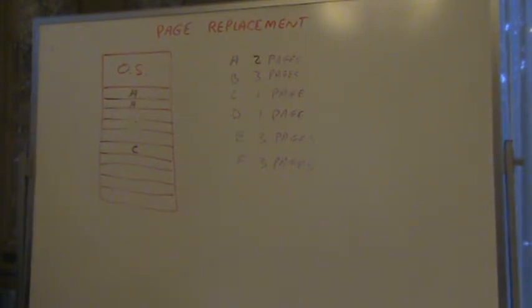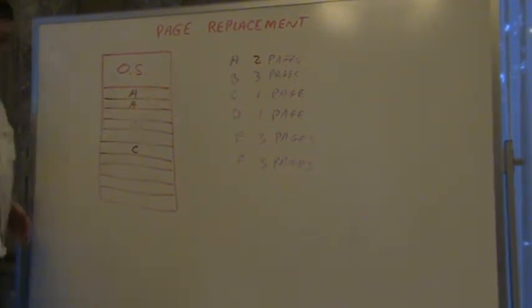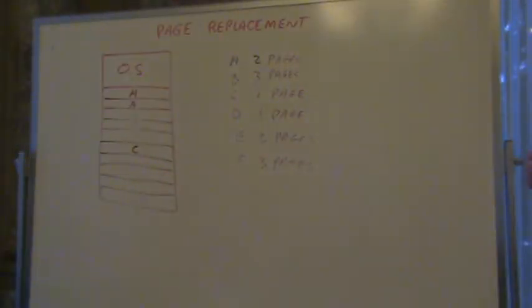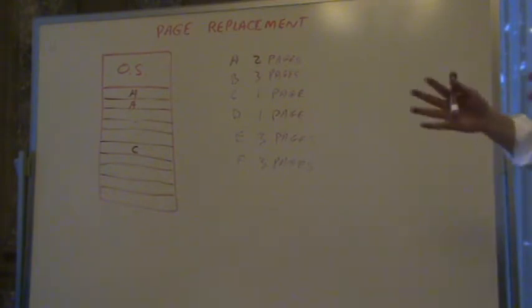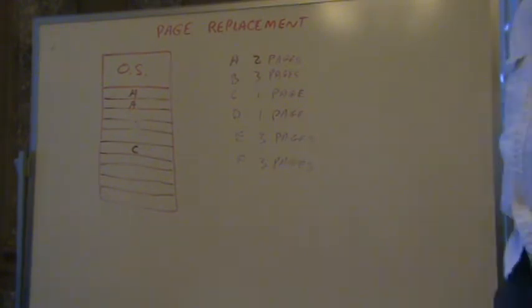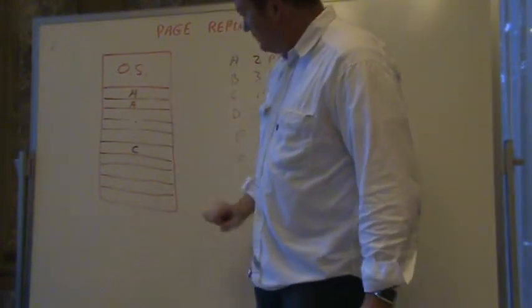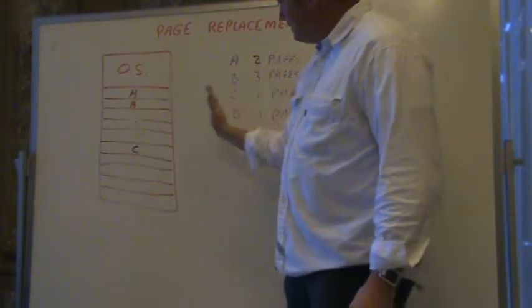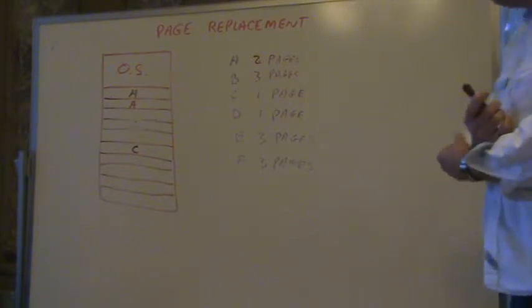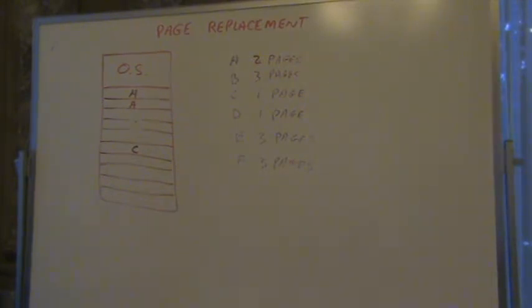Now D needs to come in, and D is one page. Where would you put it? And again, it's an operating system question, which means there's no right answer and no wrong answer. There's just — depending on the situation — some answer might be better. Of the ten page frames remaining for pages of a process to come in, where would you put it?